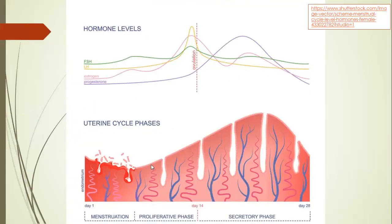This image shows us the changing thickness of the uterus lining, the endometrium. Day one of the menstrual cycle is defined as the first day of menstruation — the first day of the shedding of that uterus lining — and you can see it being broken down and ultimately shed out through the vagina. Then from around day four to day seven we move into the proliferative phase, and the uterus lining starts to get thicker and thicker up till day 14 when ovulation will occur.